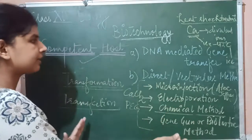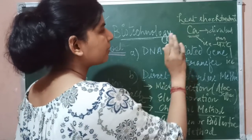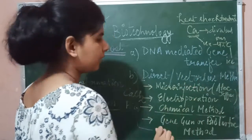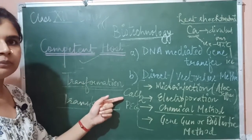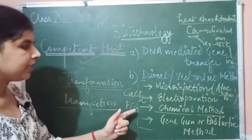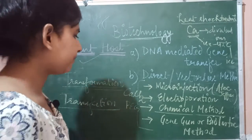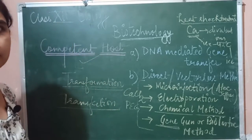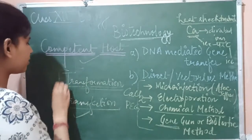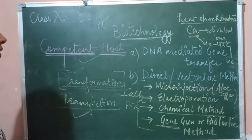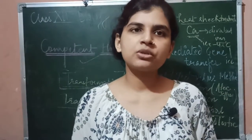To summarize: the indirect method uses calcium ions in a heat shock treatment — place on ice, heat to 42°C, then back on ice. The direct methods include micro-injection; electroporation using calcium chloride and lysozyme; the chemical method using polyethylene glycol; and the gene gun method using tungsten and gold particles coated with foreign DNA for bombardment into the host. We use the term 'transfection' when transferring DNA into eukaryotic cells, and 'transformation' when changing the genetic makeup of a cell.